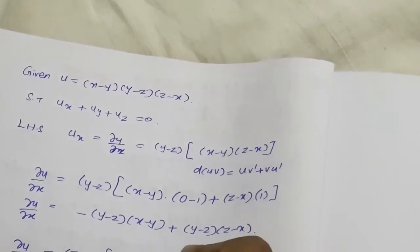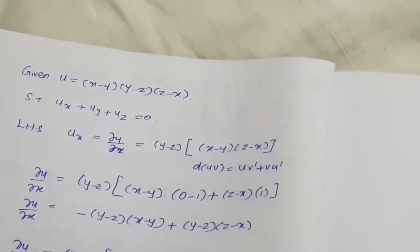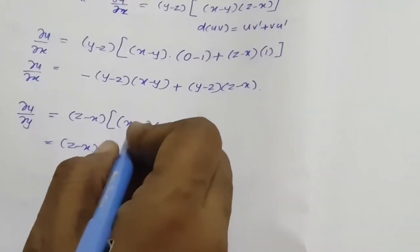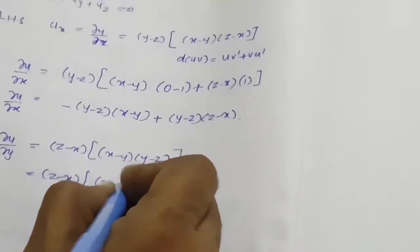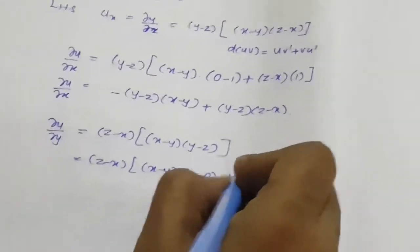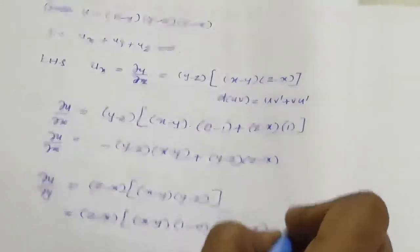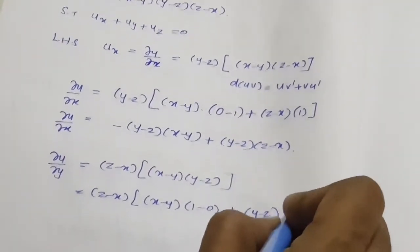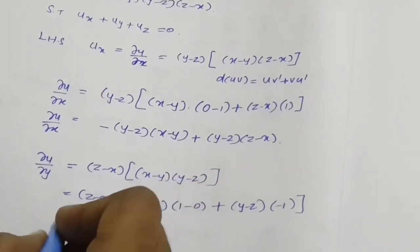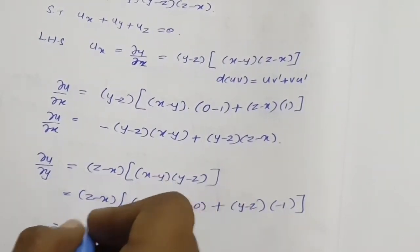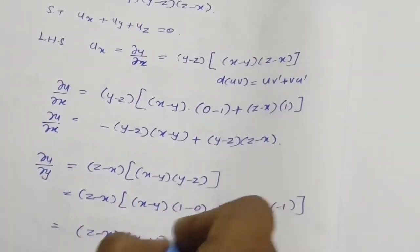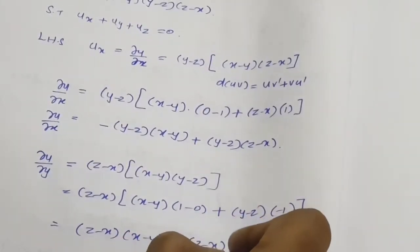We differentiate the terms containing y. This is also of the form u into v, so we apply the product rule formula. Here (x minus y) remains, and differentiating (y minus z) with respect to y gives 1 (since z is constant). Plus (y minus z) kept constant, multiplied by (x minus y) differentiated with respect to y, which gives minus 1 (since x is constant and y differentiates to 1). So ∂u/∂y equals (z minus x)(x minus y) minus (z minus x)(y minus z).